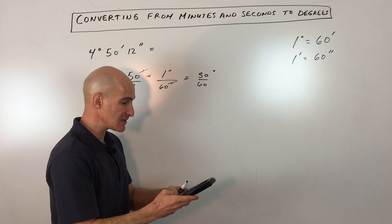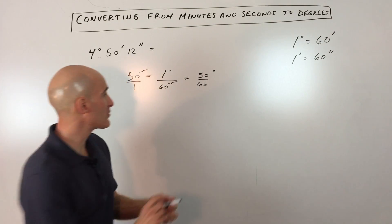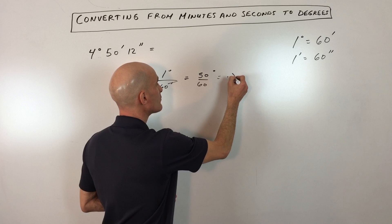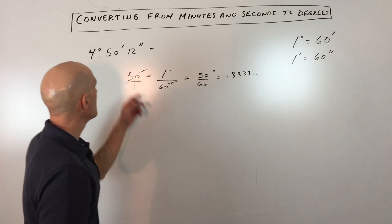So let's just see, 50 divided by 60 comes out to 0.8333 repeating, right? So this is 0.8333.